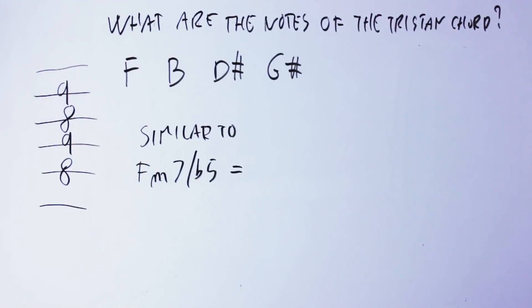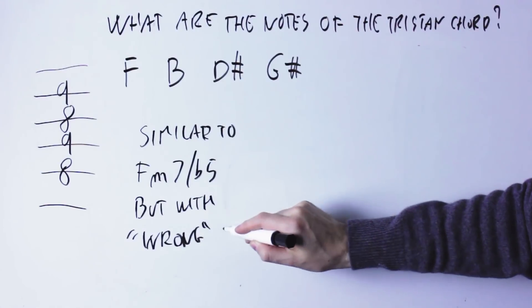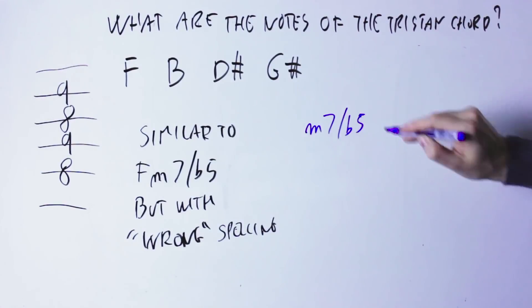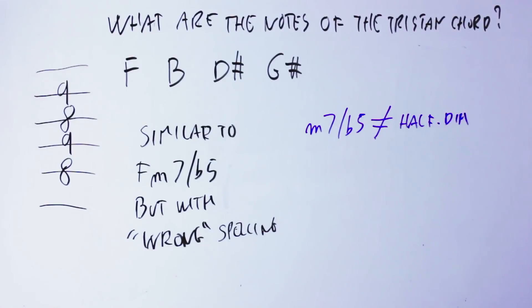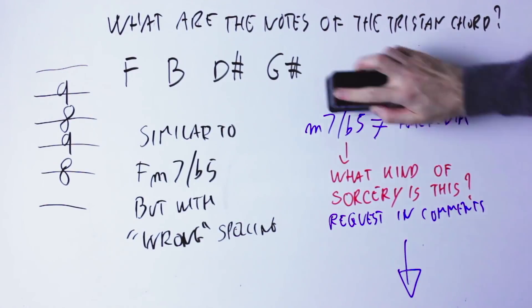...or, if you want, an F half diminished chord, but it's spelled wrong. Incidentally, did you know that the minor 7 flat 5 chord and half diminished chord are in fact not the same chord? If you're interested in that, let me know in the comments and I'll make a video about that.